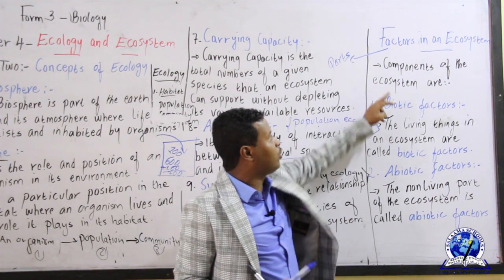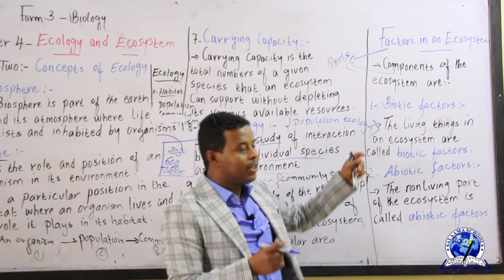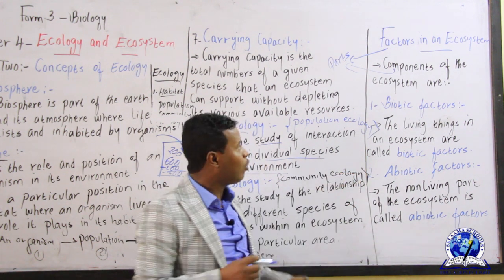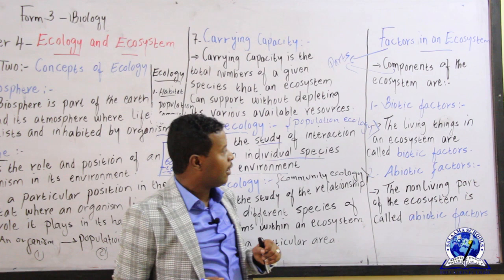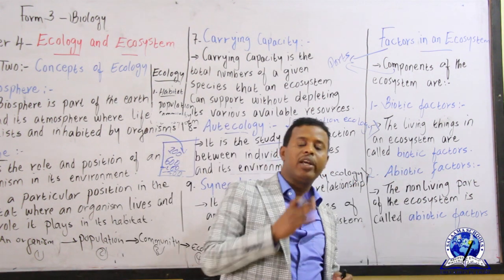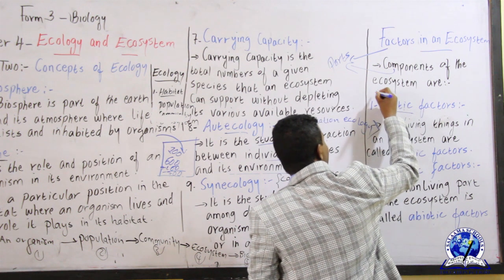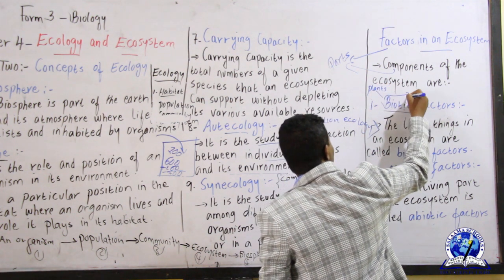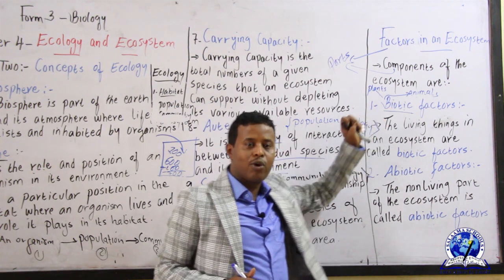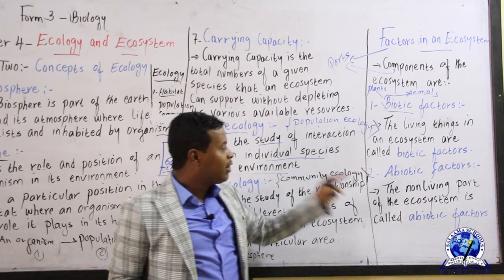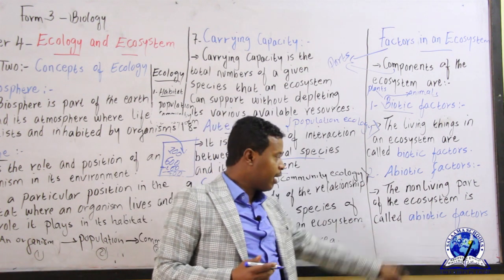The ecosystem has two main parts: biotic and abiotic. Biotic factors are the living things in an ecosystem — plants, animals, and microorganisms. Abiotic factors are the non-living parts of the ecosystem.